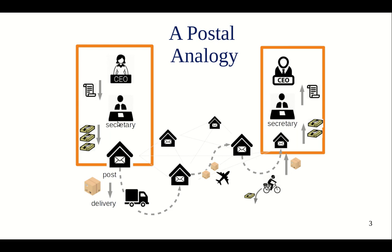Now it's the secretary's job to send it across. To do this, the secretary divides the message into packets — maybe multiple packets because it's a long message — and then they are wrapped, and the correct address, that is the PIN code, is put on the packet. Then the secretary uses the services of the postal system to actually get these messages delivered to the other end. To make sure that these packets are correctly delivered, the secretary has to put the correct address on the packets.